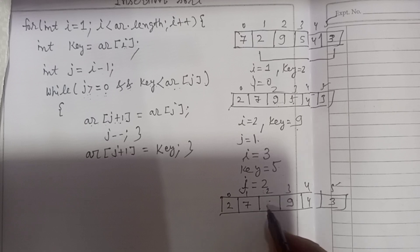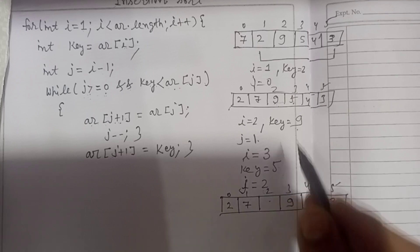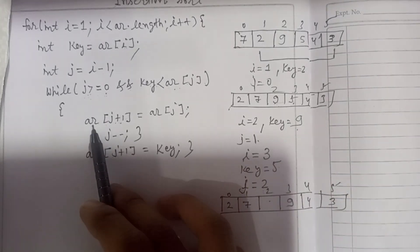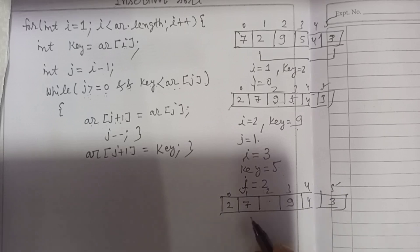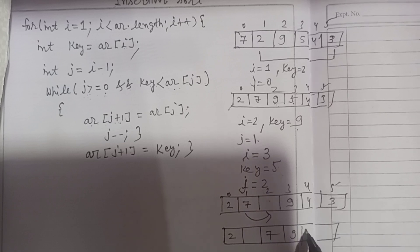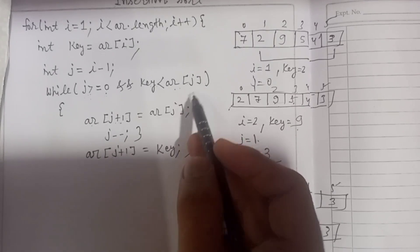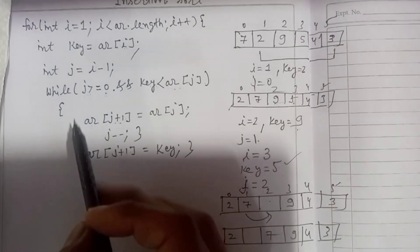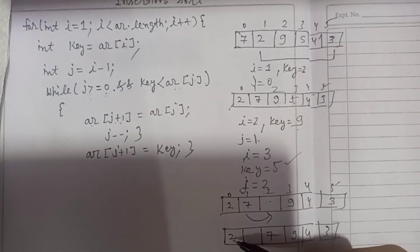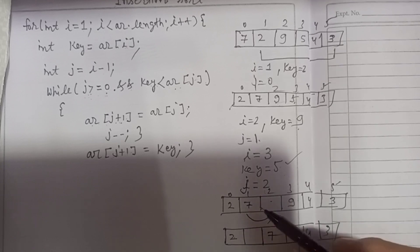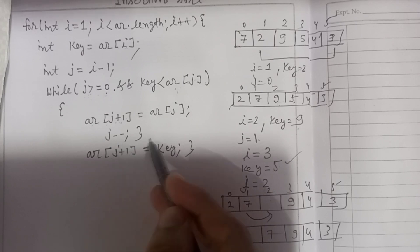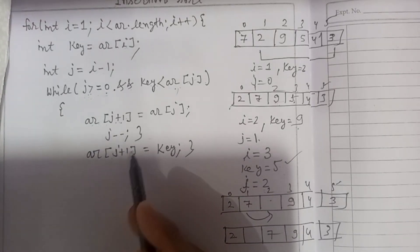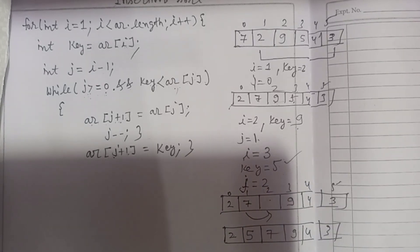Since key 5 is lesser than arr[1] which is 7, this value is also shifted right. The array becomes: 2, 7, 7, 9, 4, 3 effectively. Now j becomes zero. Condition is true. Key is 5, compared with arr[0] which is 2. Two is not greater than 5, so condition is false — the loop does not run. Since j is zero, arr[j+1] — that is arr[1] — gets key 5. After round three: 2, 5, 7, 9, 4, 3.